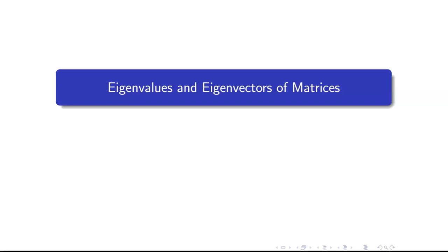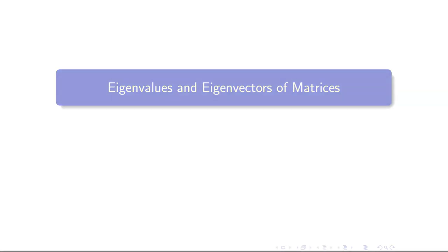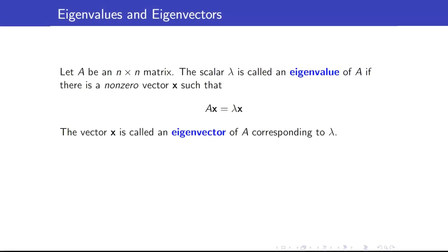In this lesson, I am going to discuss eigenvalues and eigenvectors of matrices. Suppose that we have a square matrix. The scalar lambda is called an eigenvalue of A if there is a non-zero vector x such that when we multiply A times x, we get lambda times x. We say that this vector x is an eigenvector of A corresponding to lambda. Note that this vector x must be non-zero.